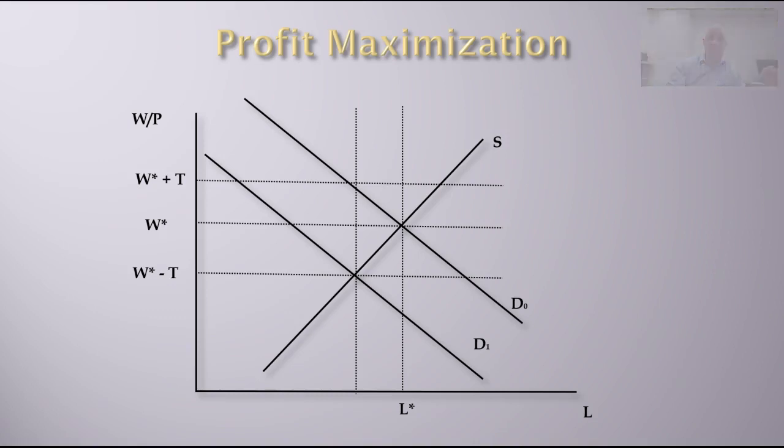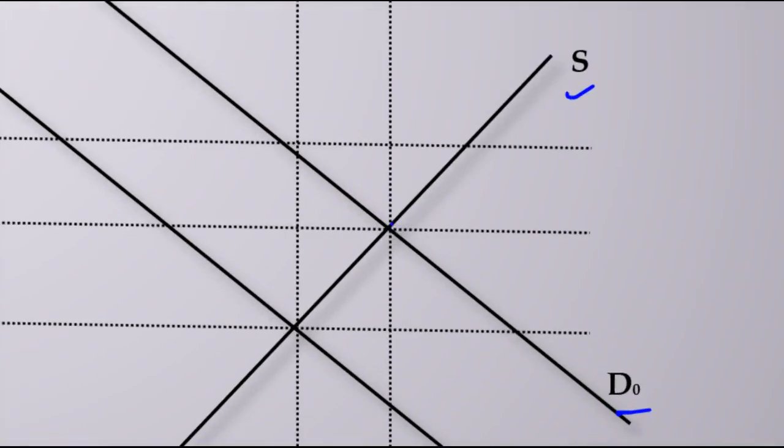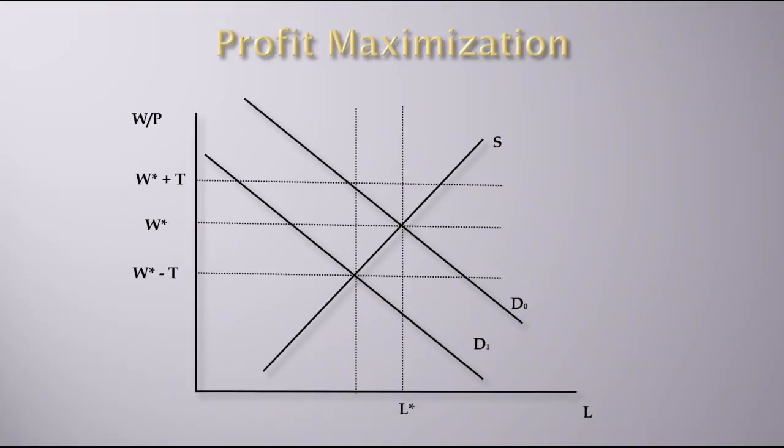Let's say that without any taxes our demand is D0. We have a demand and supply of labor, and this is our market clearing or equilibrium. You have W* and L*.